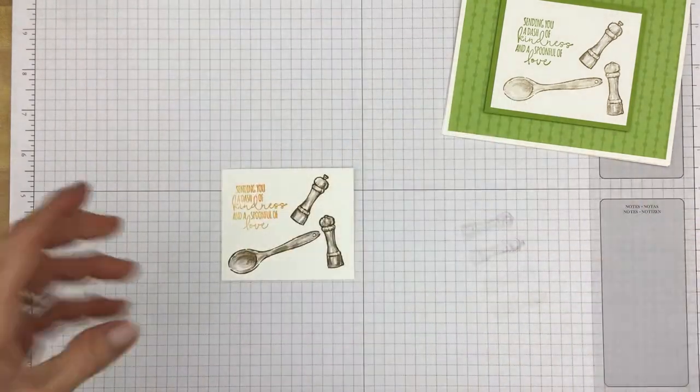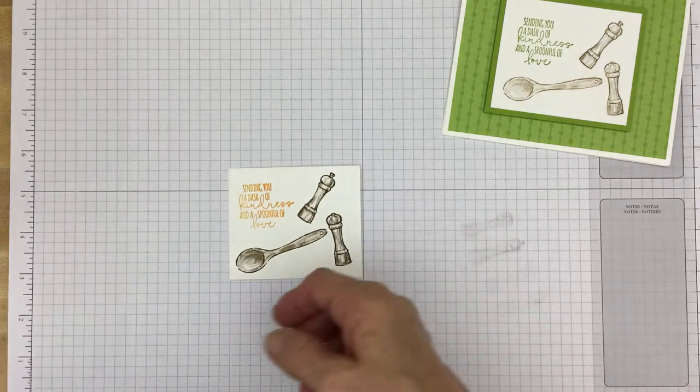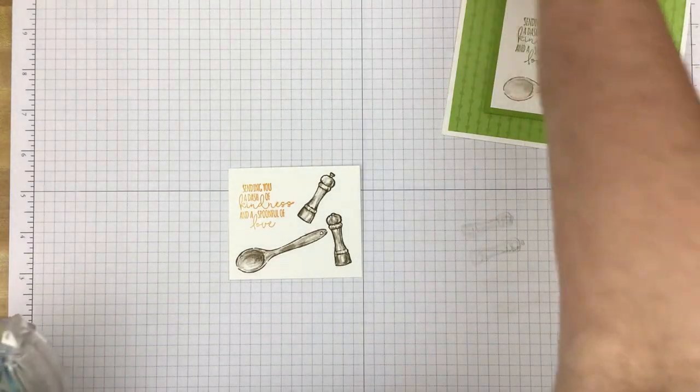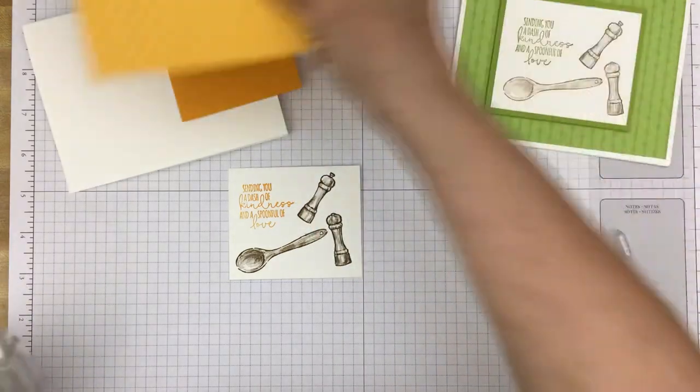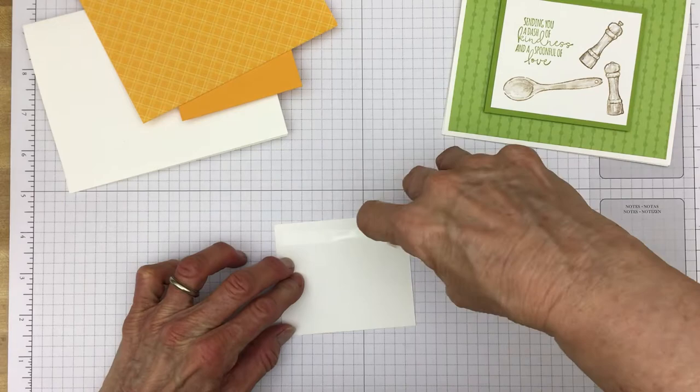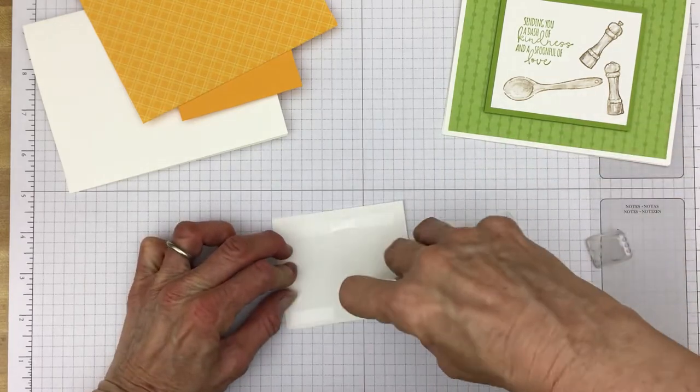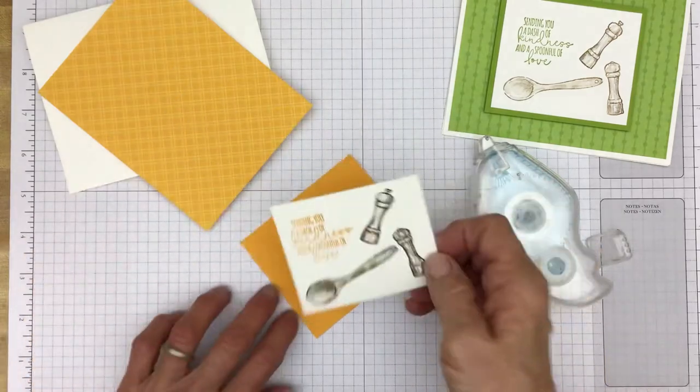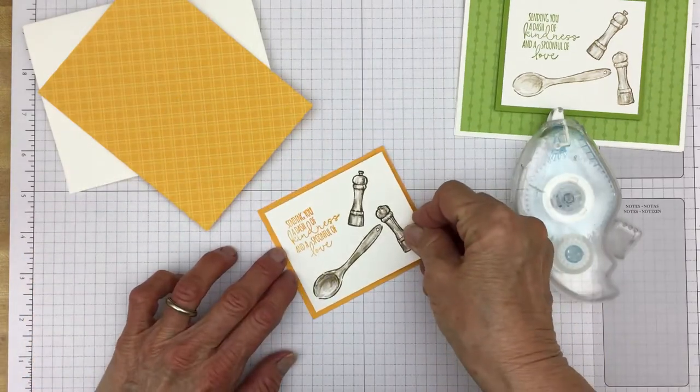Put that away. Now all we need is a little bit of stamp and seal to put this card together. Put this on its mat.